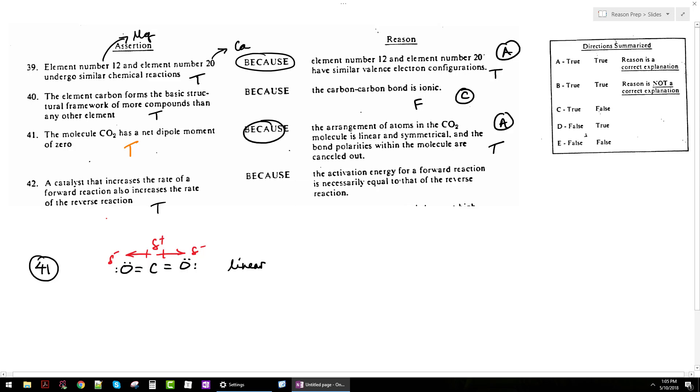Now, the second statement about activation energies being equal is definitely not true. That would pretty much never happen in most reactions. For example, if I have something like this as my reaction diagram, the activation energy of the forward reaction would be this, but the activation energy of the reverse reaction would be this. Whenever there's a change in energy, you're going to have different activation energies. So this is false. We get true, false, so 42 is C.